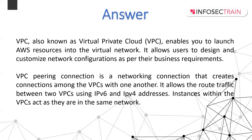Amazon VPC enables you to build a virtual network in the cloud so that you can define your network space and control how your network and EC2 resources inside your network are exposed to the internet. For example, you can have one VPC with multiple instances — some made public and some private. This model is known as bastion host architecture, where you control which resources are publicly accessible.